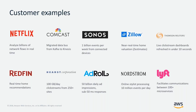We have many customers building real-time solutions on AWS. One specific example is Redfin, which does real-time home recommendations. As users browse — Redfin is a home search, discovery, and real estate company — they use Amazon Kinesis and real-time analytics to ingest a customer's behavior on the website and provide real-time home recommendations based on search criteria and browsing patterns, with the goal of finding the home the consumer wants to purchase. These real-time analytics examples span a wide variety of verticals because turning raw data into information quickly is valuable to any business.